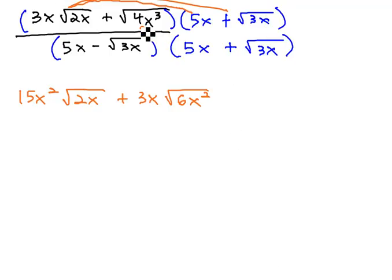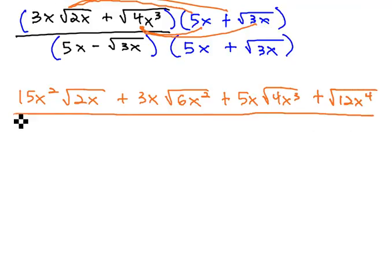Now take the root 4x cubed through, times 5x. The 5x is outside and the 4x cubed is inside, so we'll leave them as such. And then 4x cubed times 3x under the radical is 12x to the 4th, all over.